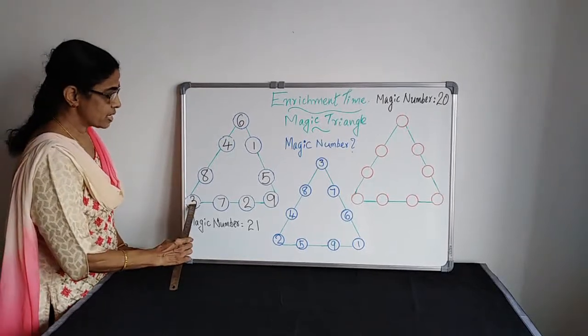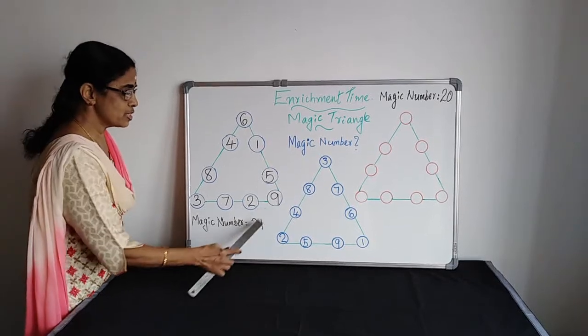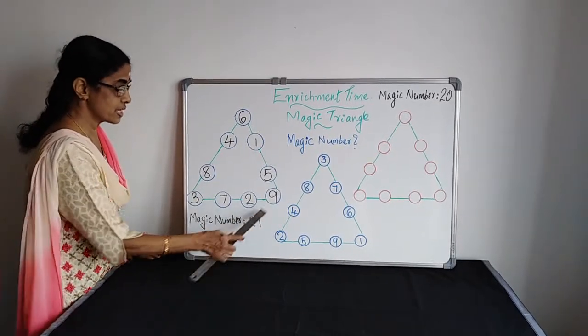Second side. 3 plus 7, 10. 10 plus 2, 12. 12 plus 9, 21. Sum of the second side also, 21.